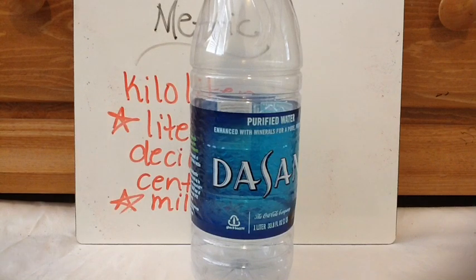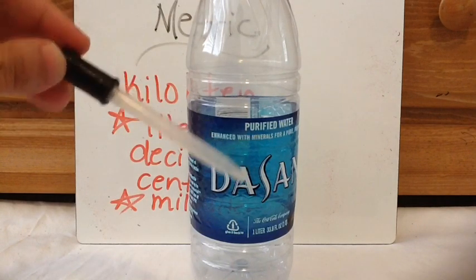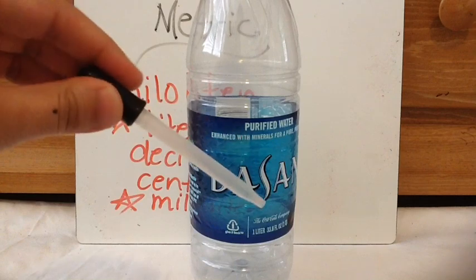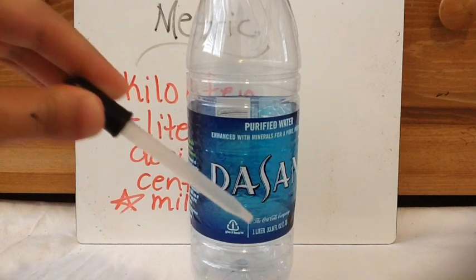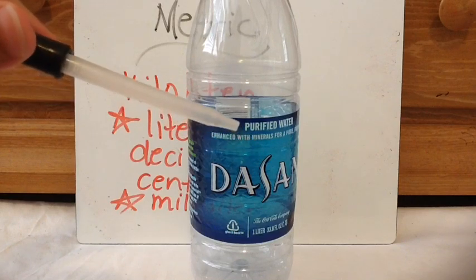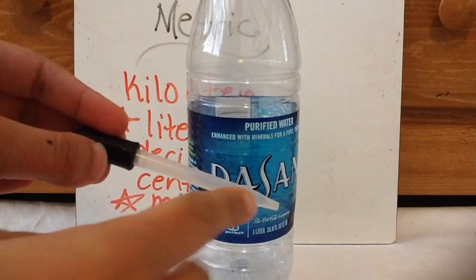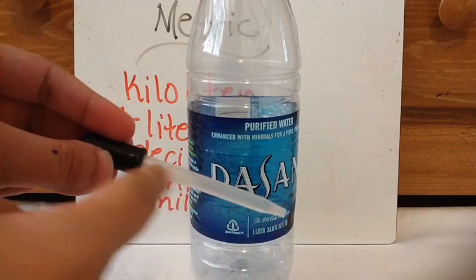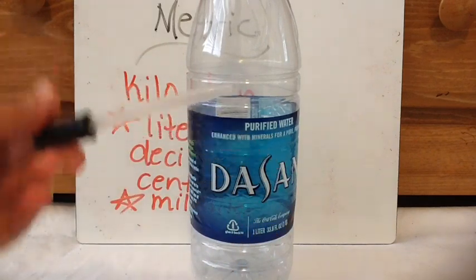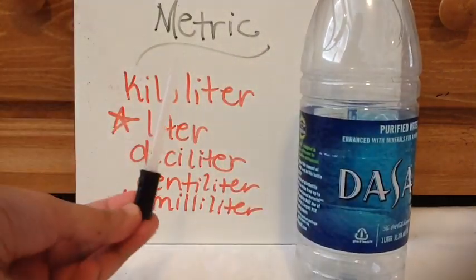I want to talk about a milliliter. A milliliter is very, very tiny. Basically, it's the amount of water that fits in this drop. So if I press this dropper and pick up water, that's about how much a milliliter is. Some droppers — like the one my students use in the science lab — go one, two, three, and when you get to that third one, that's a milliliter.